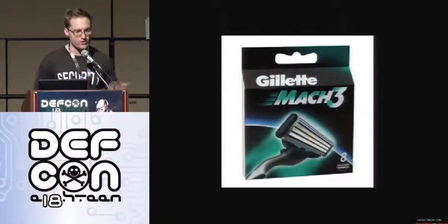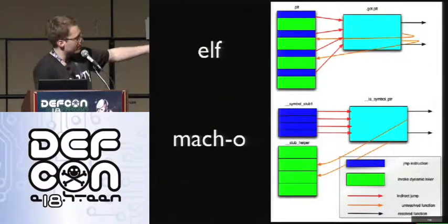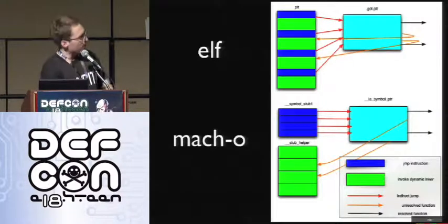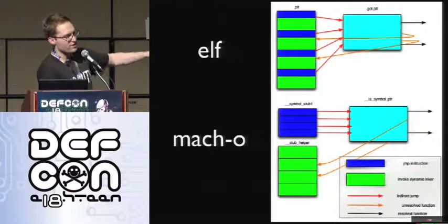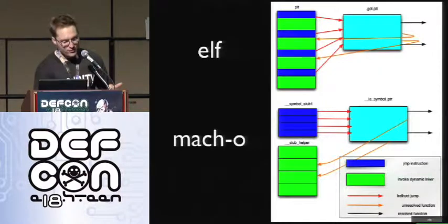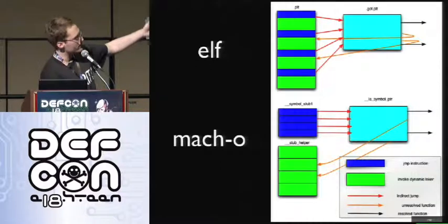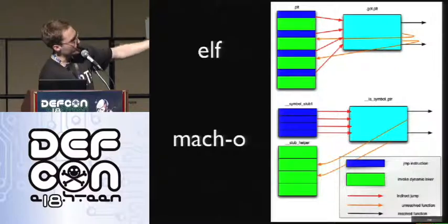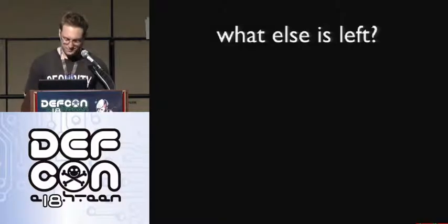What about Mach-O? It's not quite like comparing apples to oranges — it's actually really similar. ELF is on the top of this graphic, Mach-O on the bottom. The actual assembly instructions generated are exactly the same, just rearranged. On ELF you have a jump instruction followed by invoking the dynamic linker, but on Mach-O they put all the jump instructions together and then all the dynamic linking invocation functions together. They rearrange stuff, but it works exactly the same way.